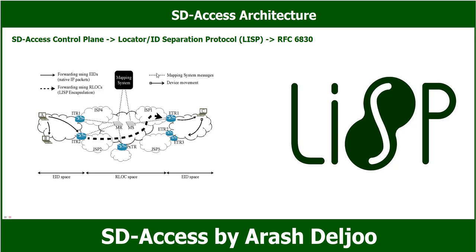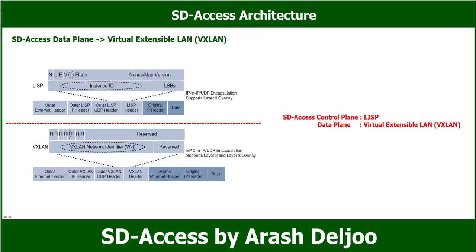The tunneling technology used for the fabric data plane is based on VXLAN — Virtual Extensible LAN. VXLAN encapsulates IP/UDP-based packets, meaning it can be forwarded by any IP-based network, legacy or third-party, and creates the overlay network for the SD Access fabric. Although LISP is the control plane for SD Access, it does not use LISP data encapsulation for the data plane. Instead it uses VXLAN encapsulation.